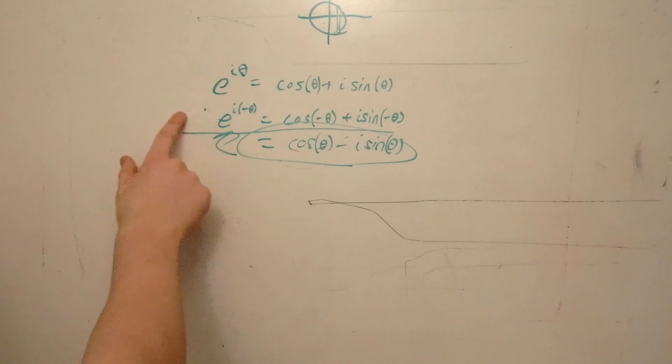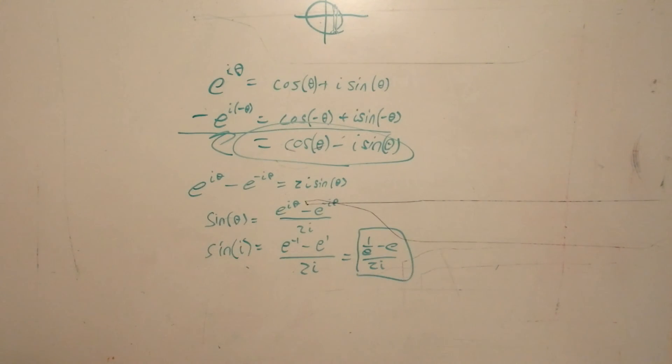So now let's go back to this step, and let's imagine that we subtracted it instead. And in this case, you're going to get two i sine theta, and the cosines are going to cross out. So we can solve in terms of sine. And this is what sine of i is equal to.